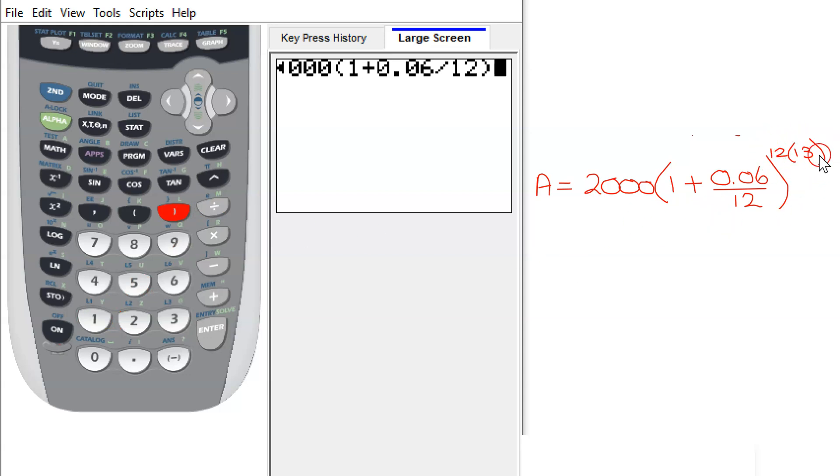And now I want the calculator to do this for me. So I'm going to have to put the 12 times 13 in its own set of parenthesis in the exponent. So I'm doing the raise to the carrot, parenthesis, 12 times 13, and close that set of parenthesis.